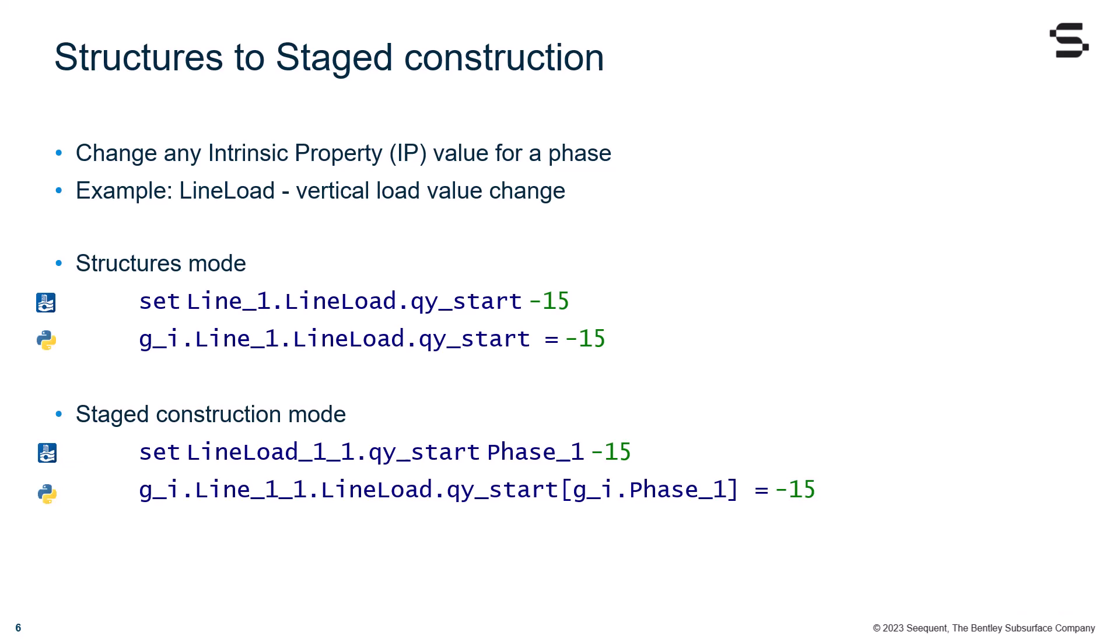When we move to staged construction, we see that by following the same steps in GUI, the Plaxis command line reports an extra part, which is the phase reference, here phase 1. This makes sense, as we are changing the value of the line load we selected for a specific phase to be minus 15. Notice that the equivalent command in Python requires that you add the phase object within square brackets, following the intrinsic property we want to change.